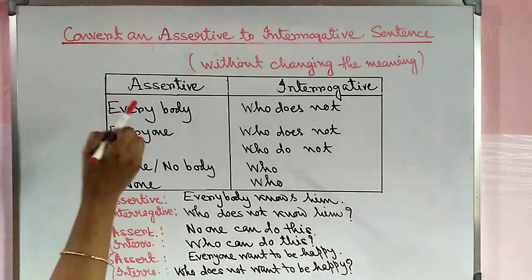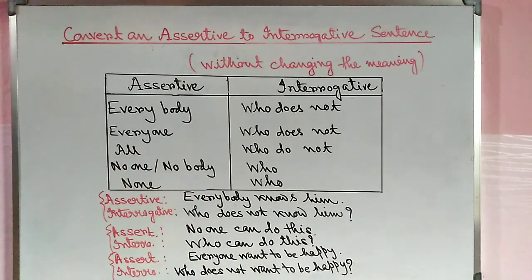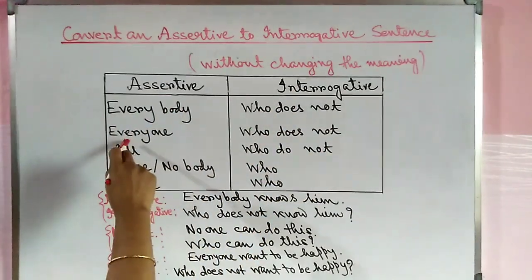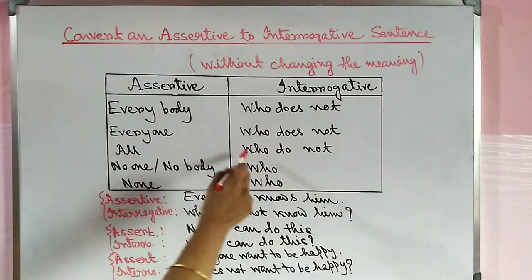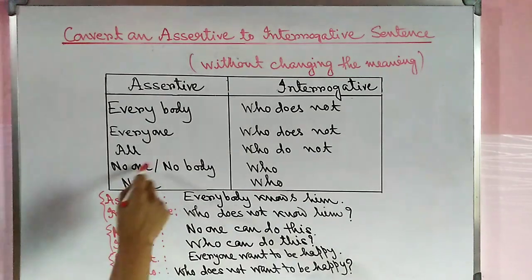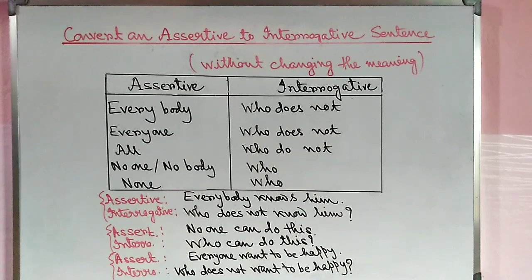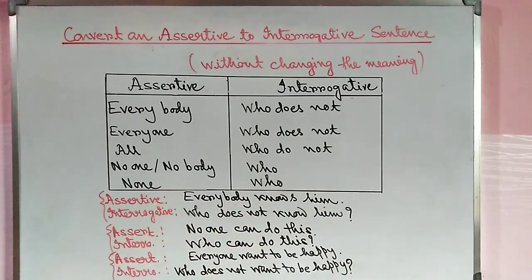Special word conversions: In assertive sentences, 'everybody,' 'everyone,' and 'all' become 'who does not' in interrogative. 'No one' or 'nobody' becomes 'who' in interrogative. 'None' also becomes 'who.' For example: 'Everybody knows him' — make it interrogative using the 'who does not' rule.